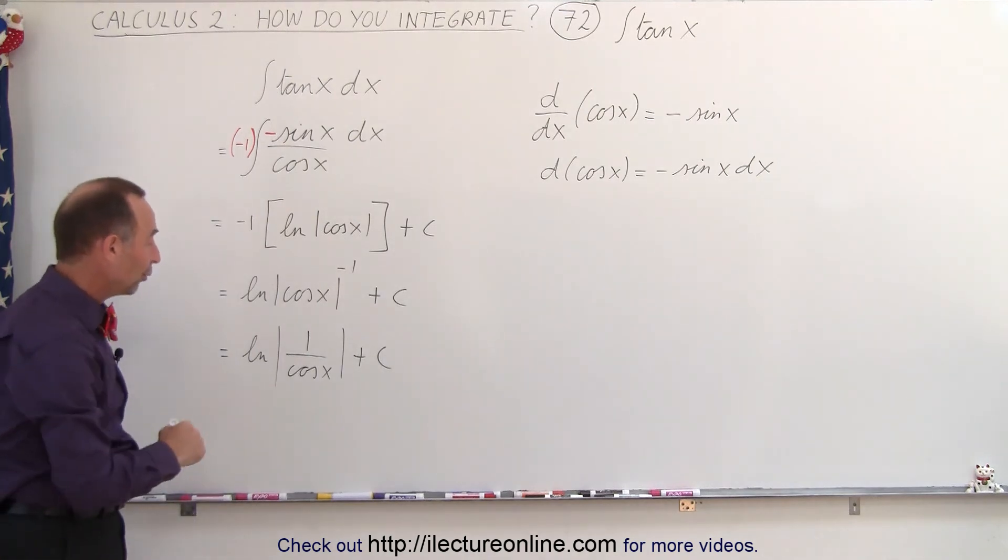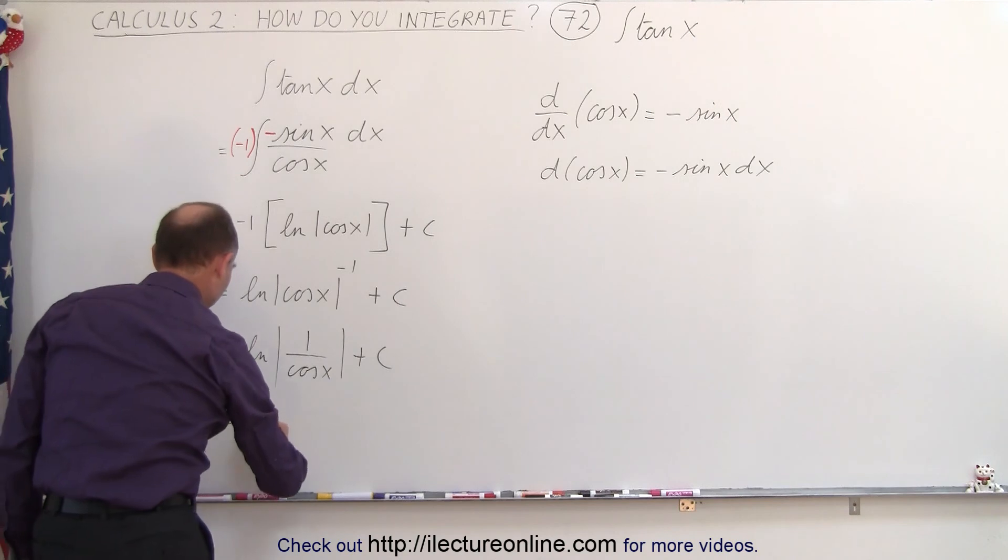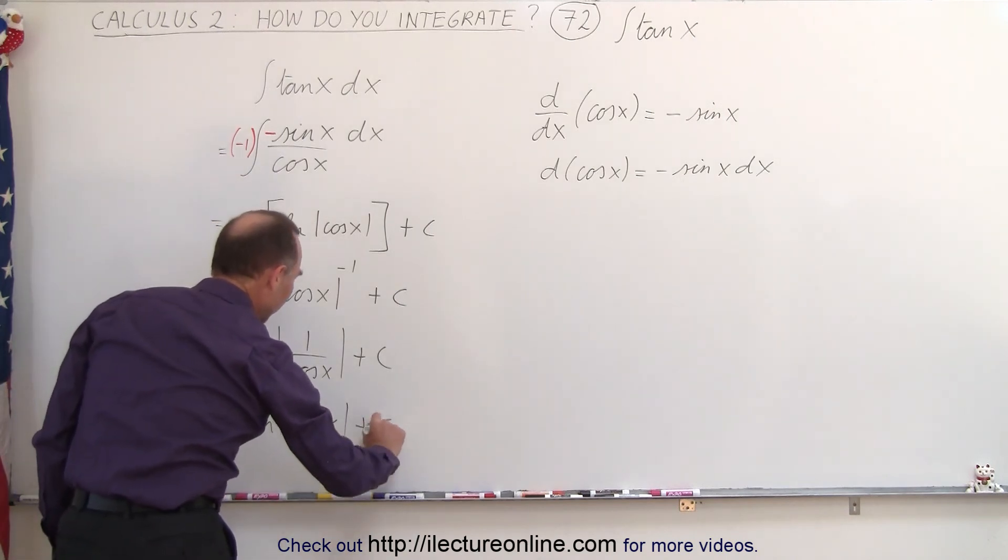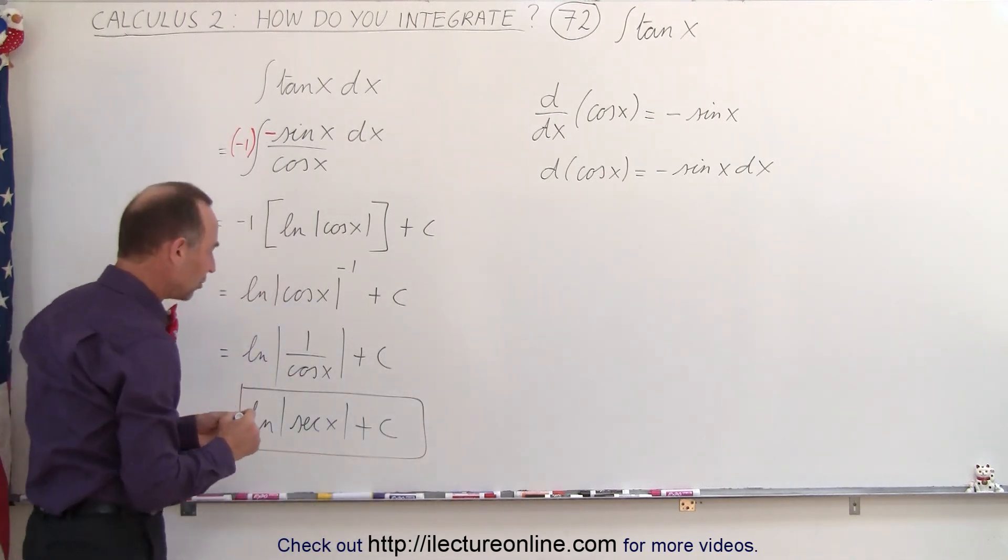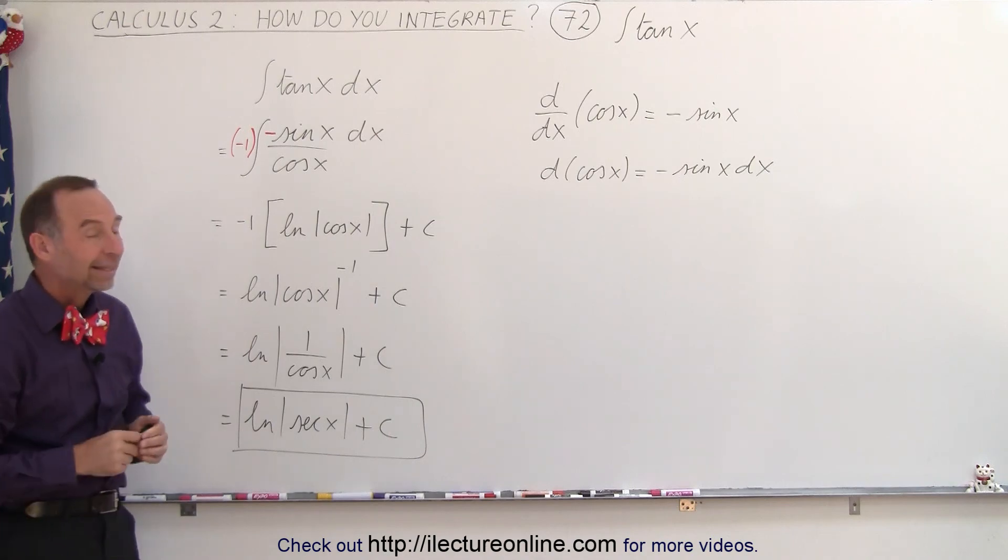And then of course, 1 over the cosine of x, that's equal to the secant of x. So this becomes equal to the natural log of the secant of x plus a constant of integration. And that then becomes the typical format that you see for the integral of the tangent of x. And that's how it's done.